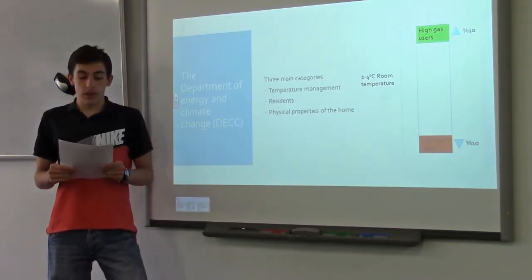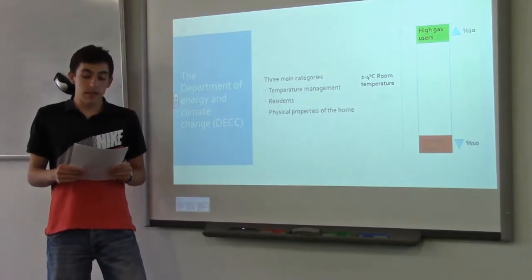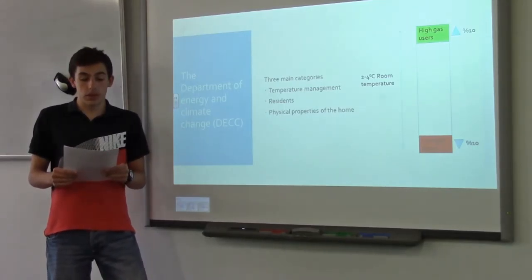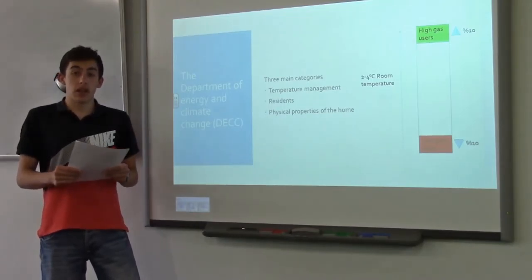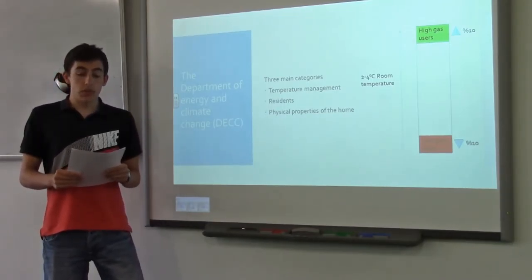In terms of the physical properties of these homes, high gas users tended to have lower efficiency homes than low gas users, due to the setup of the property, such as insulation and window double glazing.